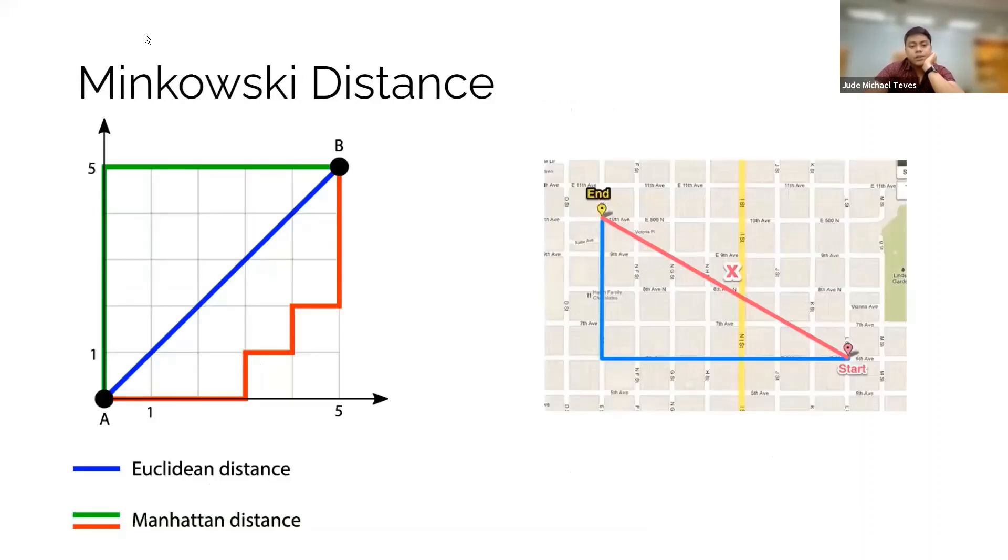So it's Minkowski distance. You have Manhattan and Euclidean. This is Manhattan distance, also called the city block distance. So the distance of this one and this one is both five, the red and the green path.